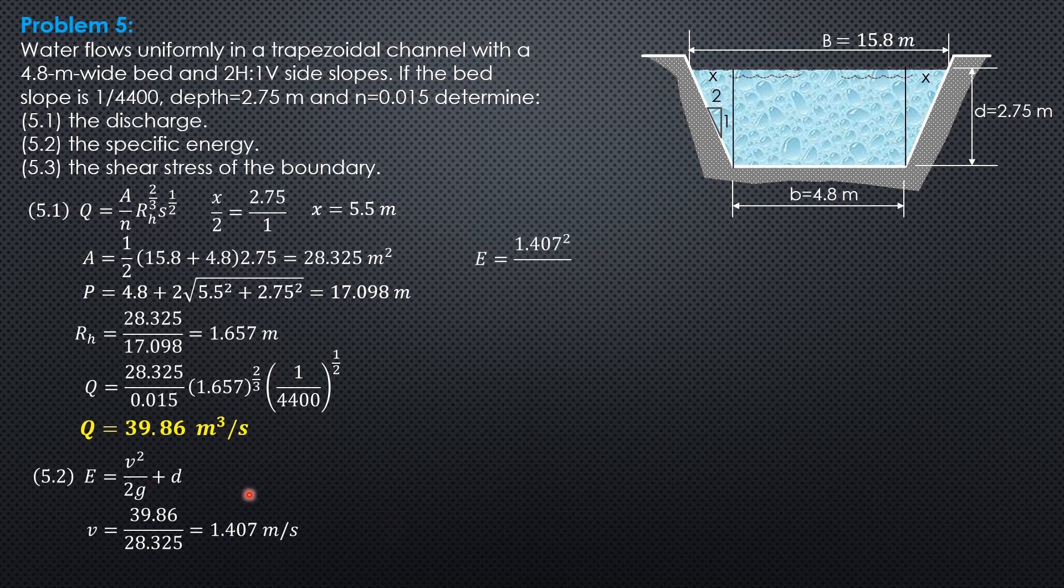So substitute 1.407 square over 19.62 plus depth of flow 2.75. So the specific energy is 2.851 meters.